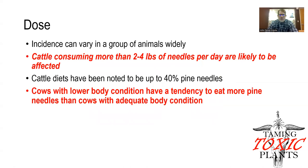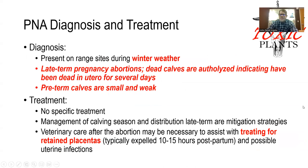In terms of dose, the incidence can vary widely in a group of animals. Generally, cattle consuming more than two to four pounds of pine needles per day during those critical gestation periods are more likely to be affected. We know cattle in winter can have diets with upwards of 40% pine needles, and if a cow eats 20 to 30 pounds of biomass a day, they easily can exceed that two to four pound threshold. Importantly, cows with lower body condition tend to eat more pine needles than cows with adequate body condition, so those animals may be at higher risk.